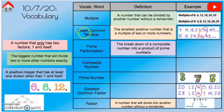Least common multiple is the smallest positive number that is a multiple of two or more numbers. For example, the first number that 9 and 12 have in common — the LCM is 36, and that's circled there. This is a new term today: prime factorization.